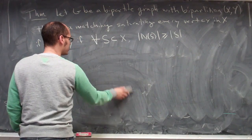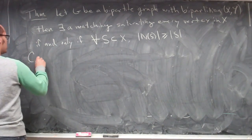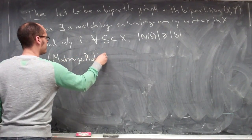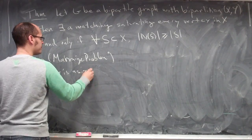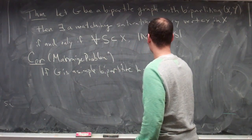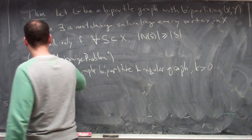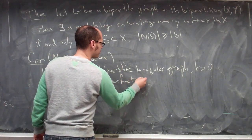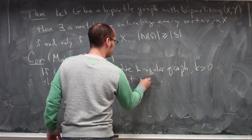Last time we showed this was equivalent to the existence of a matching that saturated x. So this time we'll talk about this corollary, which is the marriage problem: if G is a simple bipartite k-regular graph with k some positive number, then G admits a perfect matching — a matching where every vertex is saturated by some edge.